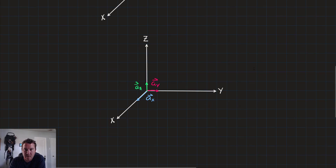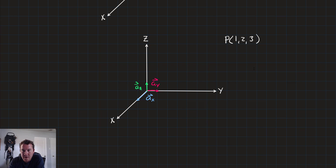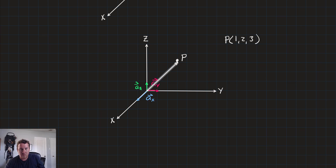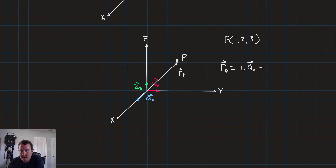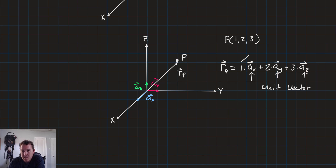Let's do a quick example to show how vectors are composed of unit vectors. If we have a point at (1, 2, 3) — that's point P — there's a vector that connects to that point, we'll call that vector r sub P. We can write that r sub P is equal to 1 times the unit vector a_x, plus 2 times unit vector a_y, plus 3 times the unit vector a_z. Each of these is a unit vector multiplied by the coefficients for the x, y, and z components.